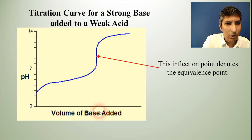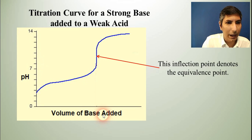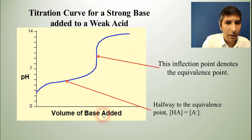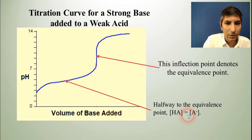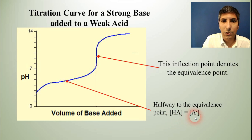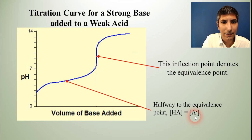We also learned another point about this graph. We know that at halfway to the equivalence point, the concentration of the weak acid is equivalent to the concentration of the conjugate base.